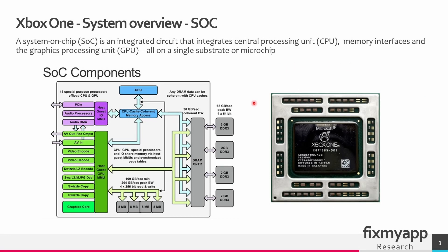Here you can see the physical image of the SOC. The SOC stands for system on a chip — it's a single chip that integrates multiple components. As you can see on the left-hand side, all these components are embedded into one single die. The components in this chip are the CPU, the GPU, memory controller, NordBridge, and video and audio encoders. Basically, this IC or chip is the brain of the Xbox.